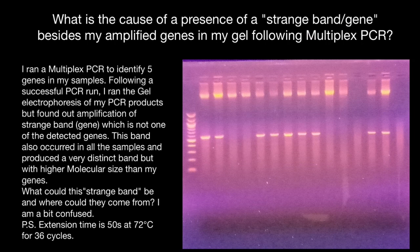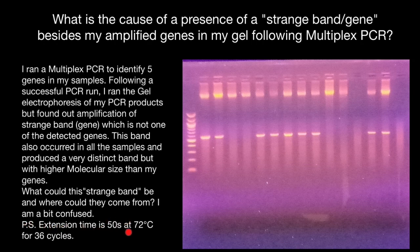I'm going to explain what multiplex PCR is for those who are beginners. I ran multiplex PCR to identify five genes in my samples. Following a successful PCR run, I ran gel electrophoresis of my PCR products, but found amplification of a strange band which is not one of the detected genes. This band occurred in all samples, produced a very distinct band with higher molecular size than my genes. The PCR scripting uses 50-second extension time at 72°C for 36 cycles.